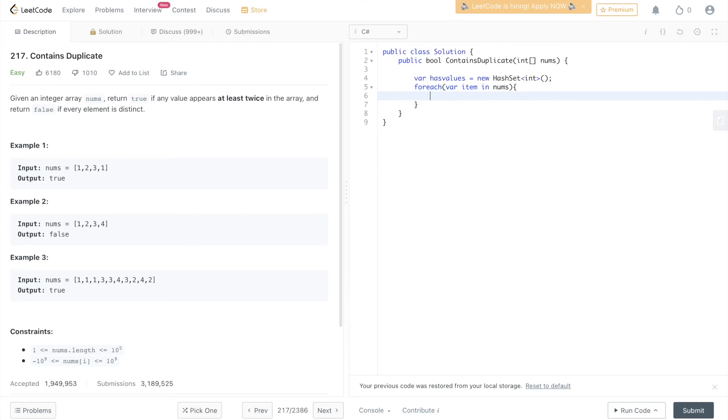For every iteration, we would be checking inside the hash set if that value is already present. If during any of the iterations we find a value which was already added to the hash set, we just break the loop and return true because we already found a duplicate value. Otherwise, we keep adding to the hash set, and eventually once the loop runs out, we just return false because we were not able to find any value which was a duplicate inside the hash set.